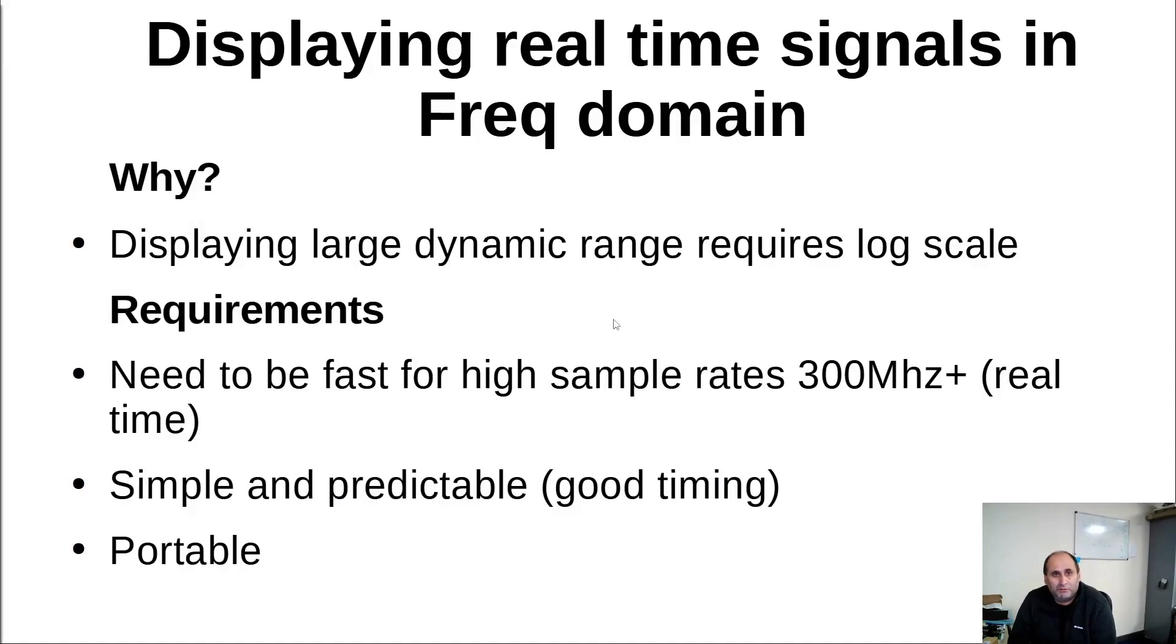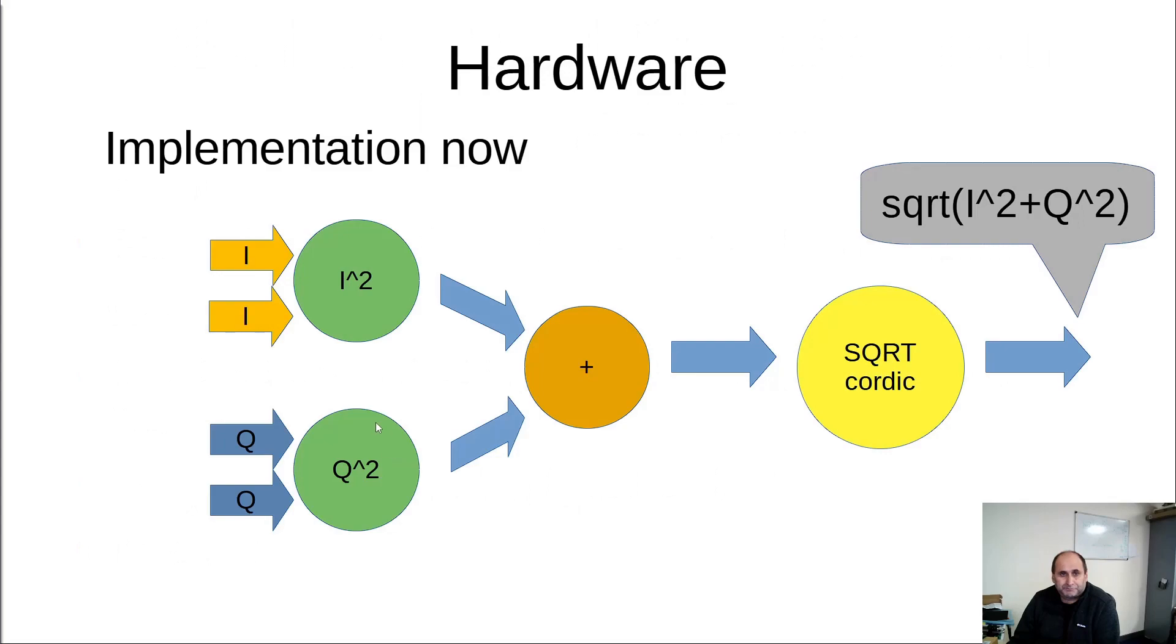Okay, so why we do this? We want to display logarithmic values like a spectrum analyzer. So we want to display signals, the signal energy on the logarithmic scale. Now it has to be fast enough, 300 megahertz. It has to be simple and predictable. Now this is what we have so far. So we have the I signal, the Q signal, we square them, we add them together, extract the square root. Now we can get away without the square root, and I'll show you in the math.